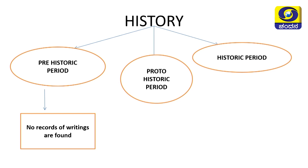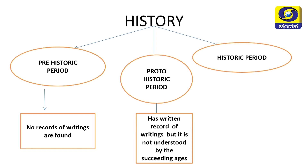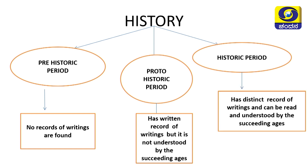The second period is the proto-historic period. Proto-historic period is a period which has written records of writings, but it is not understood by the succeeding ages. An example for this is the Harappan civilization. The third period is the historic period. Historic period is a period which has distinct records of writings and can be read and understood by the succeeding ages.